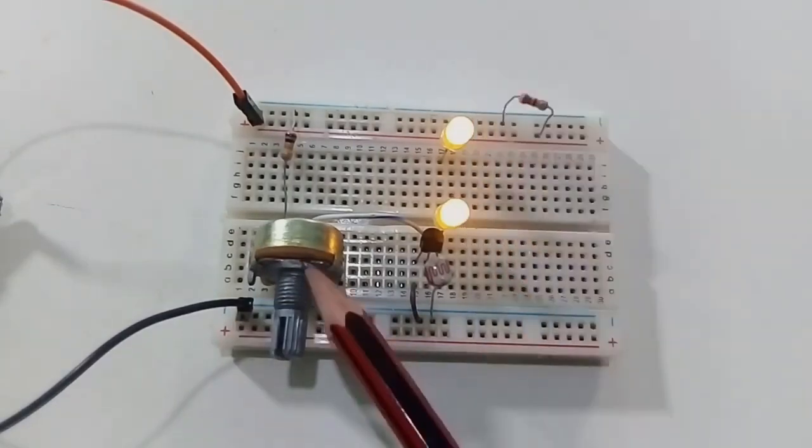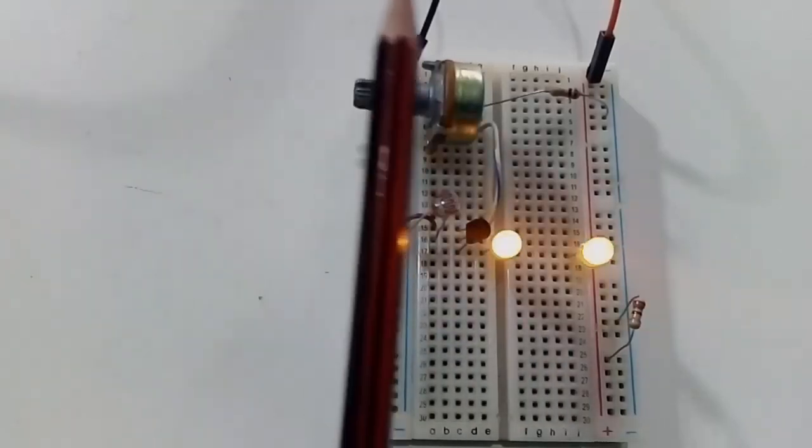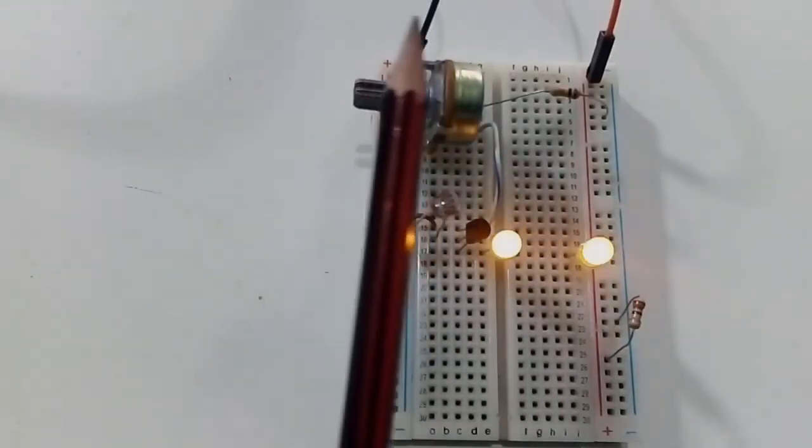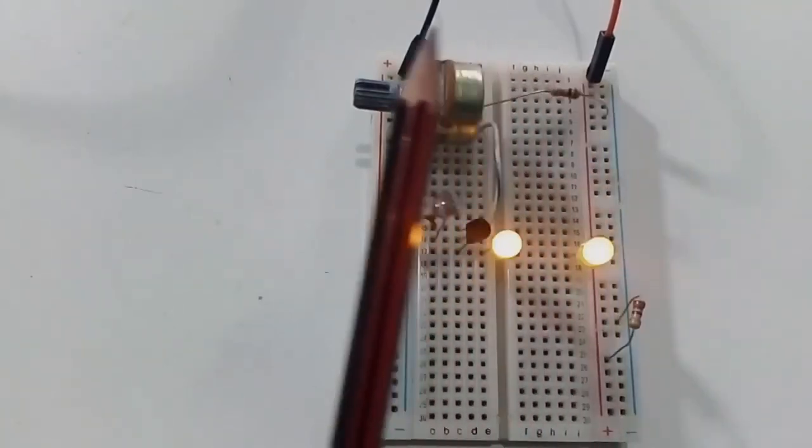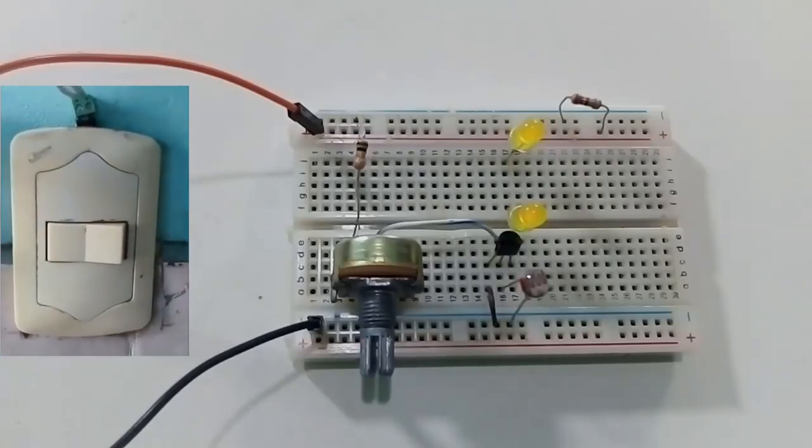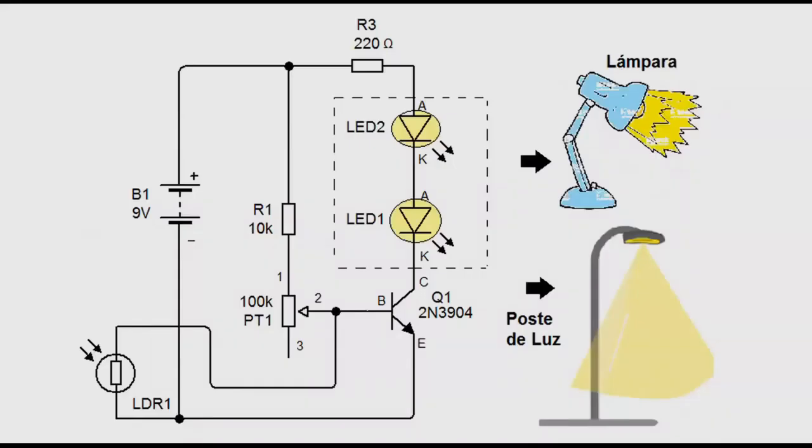The potentiometer allows you to adjust the positive signal balance through voltage division, and so activating the transistor more or less. This is how you change the sensitivity of the sensor. And so we get a very simple darkness detector with LEDs and a simple transistor.